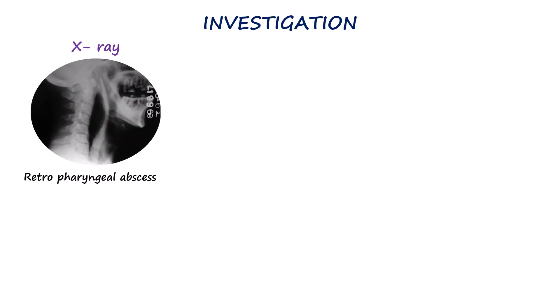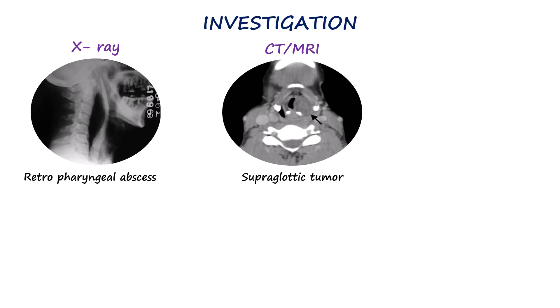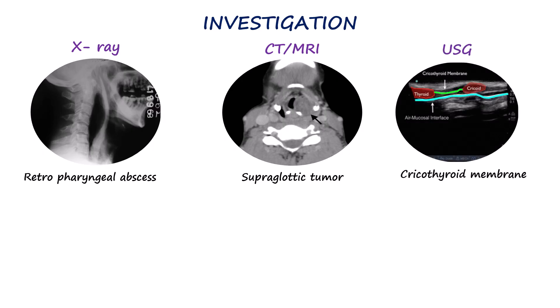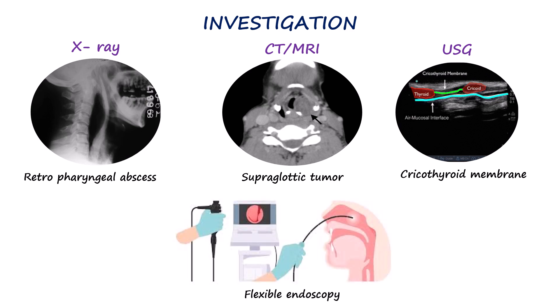The last part of airway assessment is investigation, which is used when clinical examination suggests potential difficulty or anatomical abnormalities. Neck X-rays can show limited movement or unusual anatomy, while CT and MRI provide detailed views in cases of tumors, trauma, or congenital anomalies. Ultrasound helps assess tongue size, pre-epiglottic space, and locate the cricothyroid membrane. Flexible endoscopy allows direct visualization of obstructions or lesions. These investigations complement the bedside assessment and help plan airway management in difficult cases.